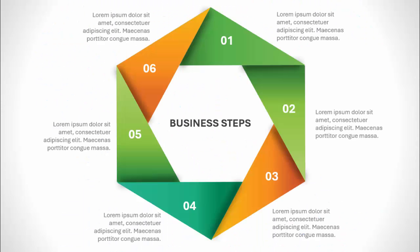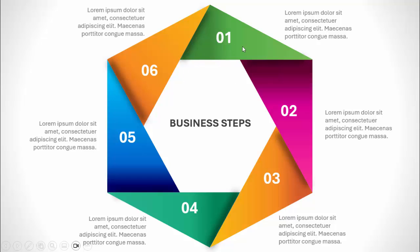In today's tutorial I'm going to show you how to create this six-step hexagon shape infographic slide in PowerPoint. I have created this hexagon shape with six steps and different color combinations. You can add the option and detailed text here, and in the center you can add the title or main headline. I've also created a second slide with totally different colors and a shadow effect.